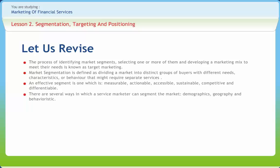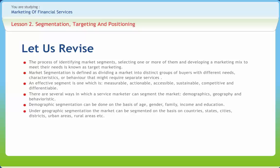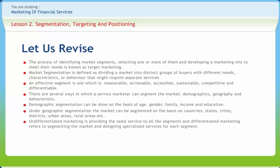Demographic segmentation can be done on the basis of age, gender, family, income, and education. Under geographic segmentation, the market can be segmented on the basis of countries, states, cities, districts, urban areas, rural areas, etc. Behavioristic segmentation can be done based on benefits, attitudes, motivation, usage rate, loyalty, etc. Undifferentiated marketing is providing the same service to all segments, and differentiated marketing refers to segmenting the market and designing specialized services for each segment.